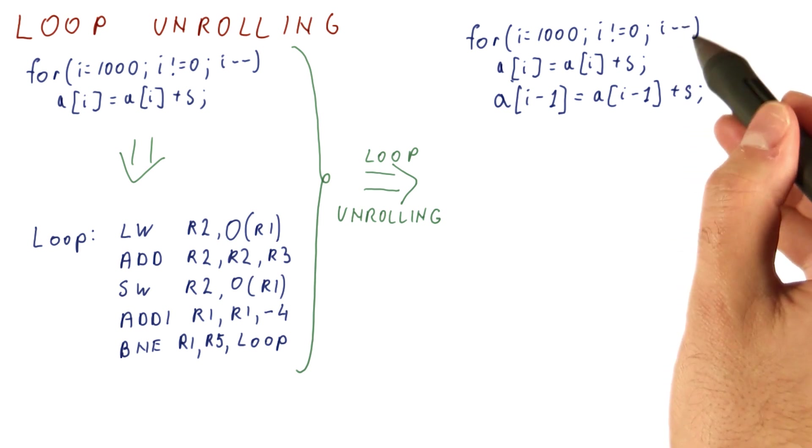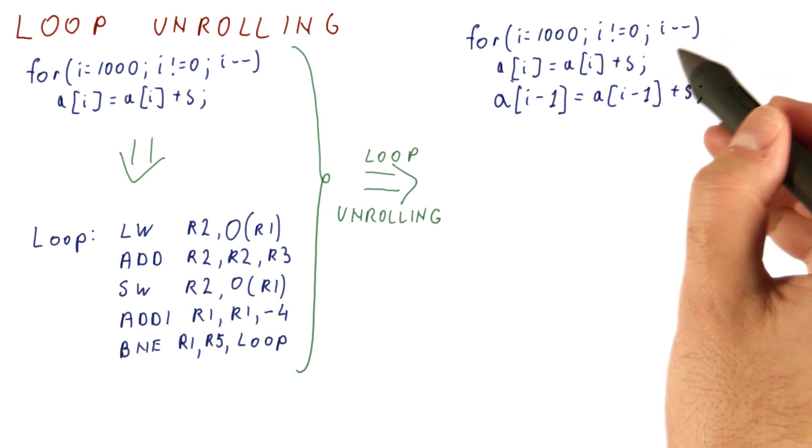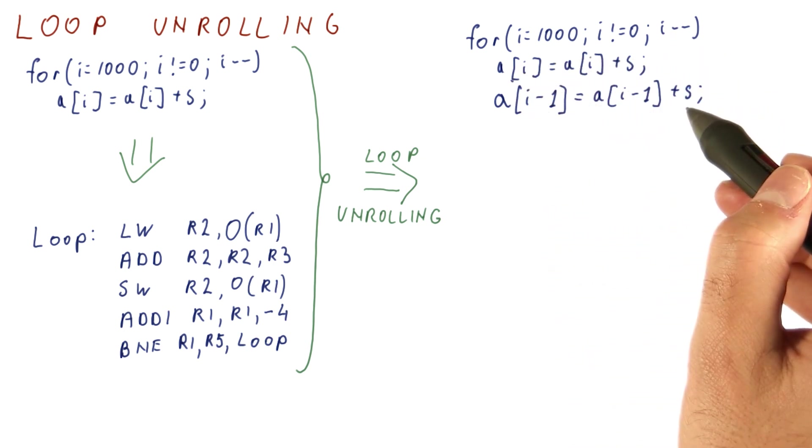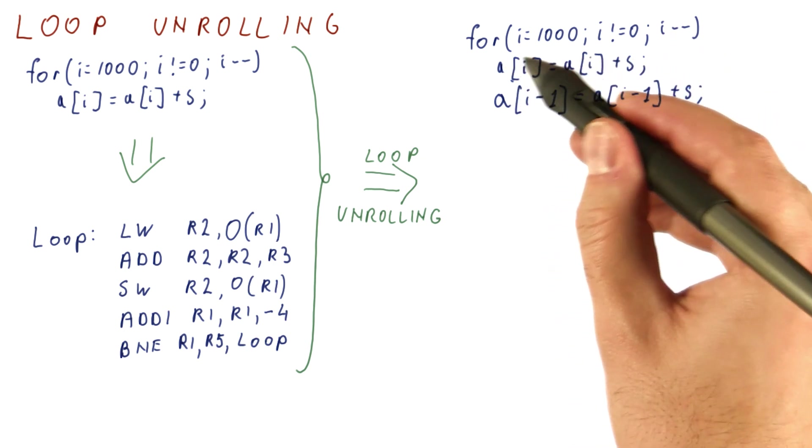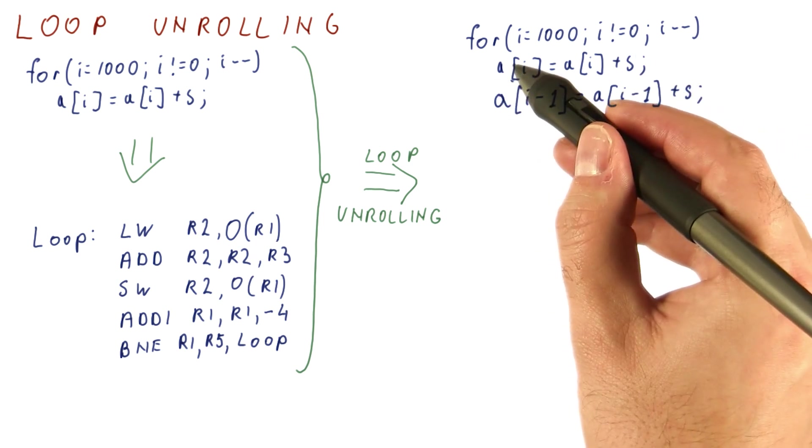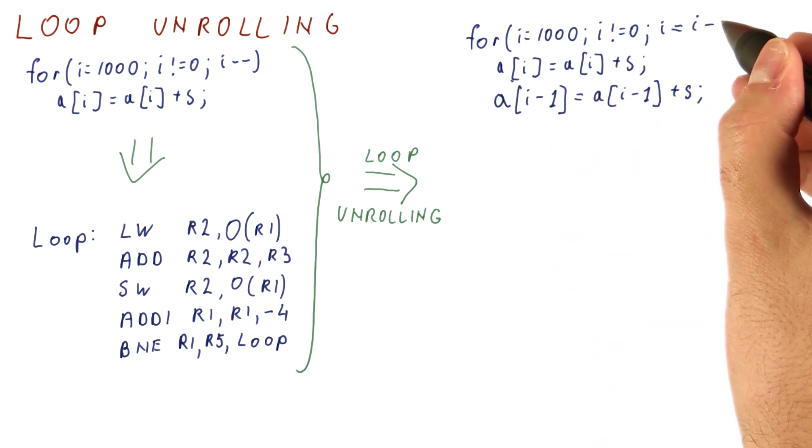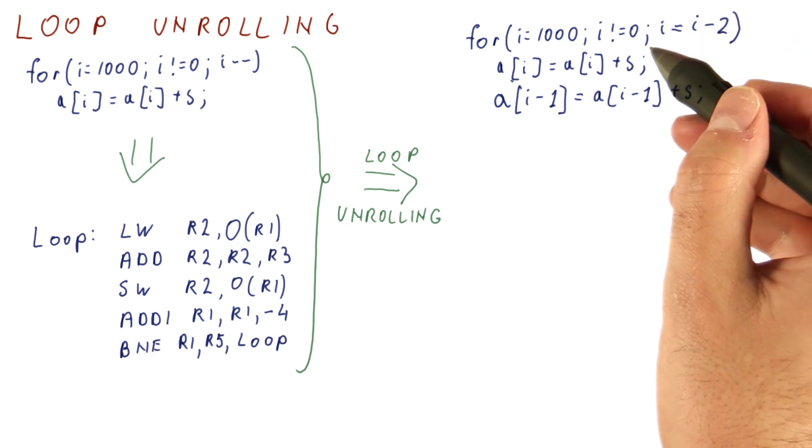However, this loop still counts one at a time. So we do this, we add s to the next element. In the next iteration of the loop, we would now add s again to the same element we already processed here. So we also need to adjust the loop counter update to update by two now.